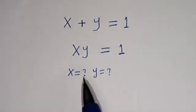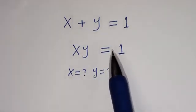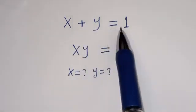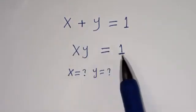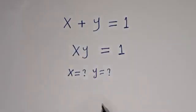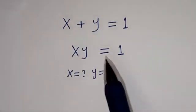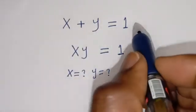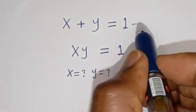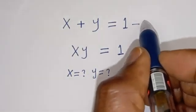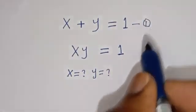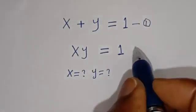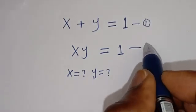Hello. How to solve for S and Y in this equation: S plus Y is equal to 1 — let's call this equation 1. S times Y is equal to 1 — let's call this equation 2.